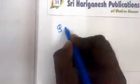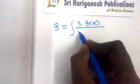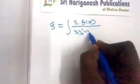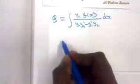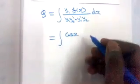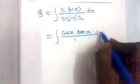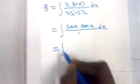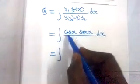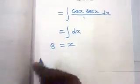Next, I am going to find capital Q. Q = ∫[y1·f(x) / (y1·y2' − y1'·y2)] dx = ∫[cos(x)·sec(x) / 1] dx. Since sec(x) = 1/cos(x), cos(x) and 1/cos(x) cancel, leaving ∫ dx. Therefore Q = x.